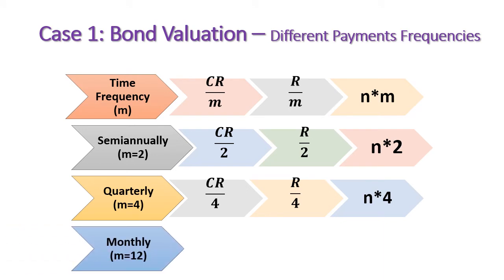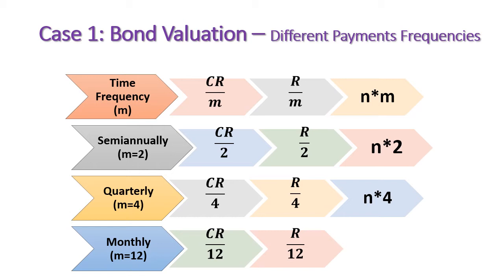In the case of monthly coupon payments, the number of months per year is 12, so we divide the coupon rate by 12, divide the required rate or discount rate by 12, and multiply the number of years by 12.